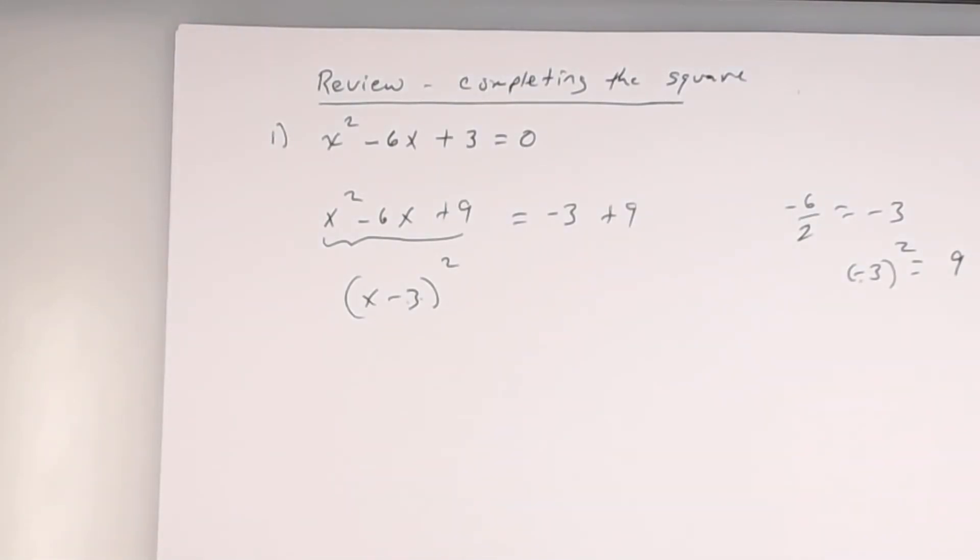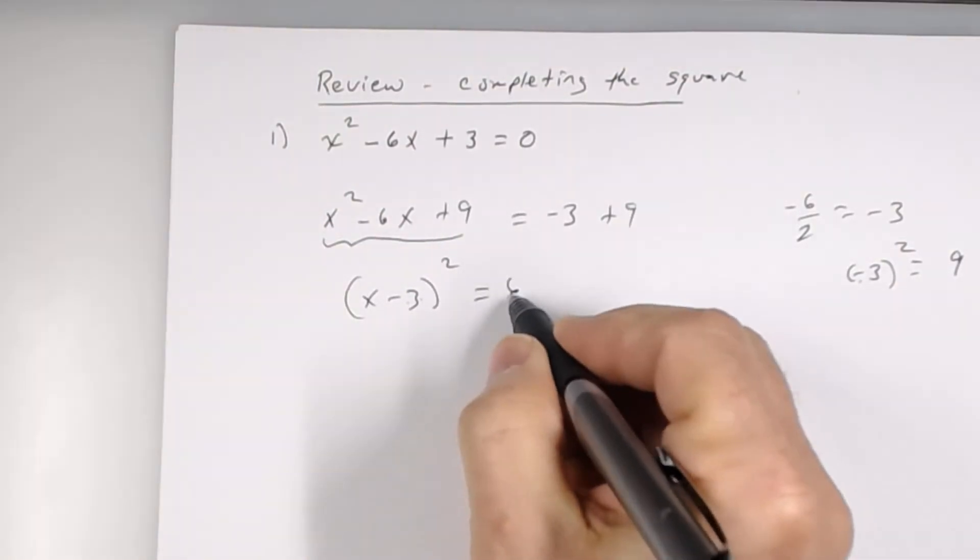So, X minus 6. X squared minus 6X plus 9 is factored as X minus 3 and X minus 3. And on the right side, what do you get? 6. 6. Alright.